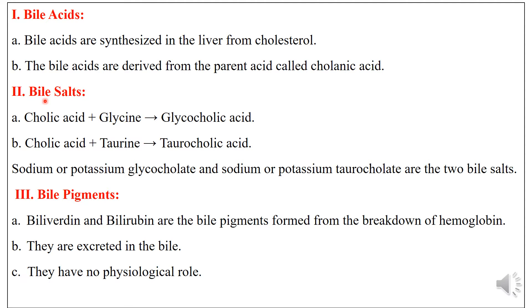The next component of bile is bile salts. Bile salts are formed when cholic acid reacts with glycine to give glycocholic acid, and cholic acid reacts with taurine to give taurocholic acid. Both glycocholic acid and taurocholic acid then react with sodium or potassium to form sodium or potassium glycocholate and sodium or potassium taurocholate — these two are the bile salts.